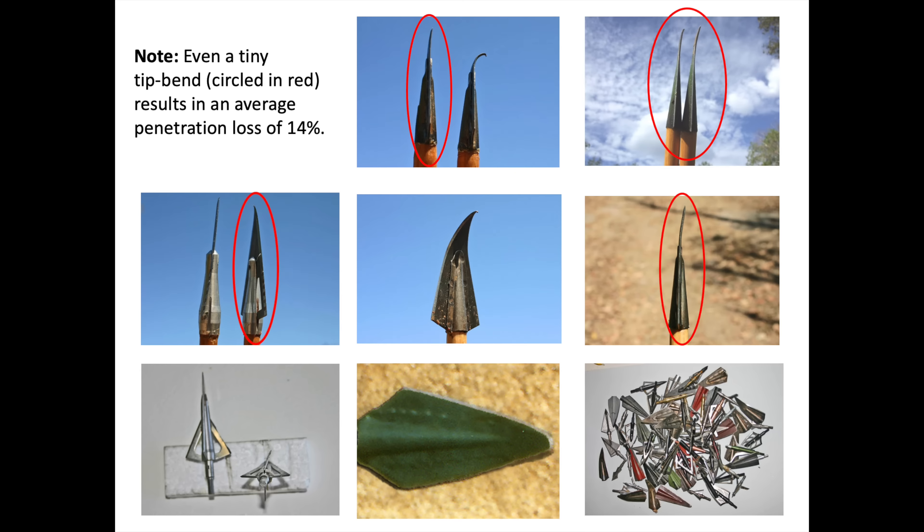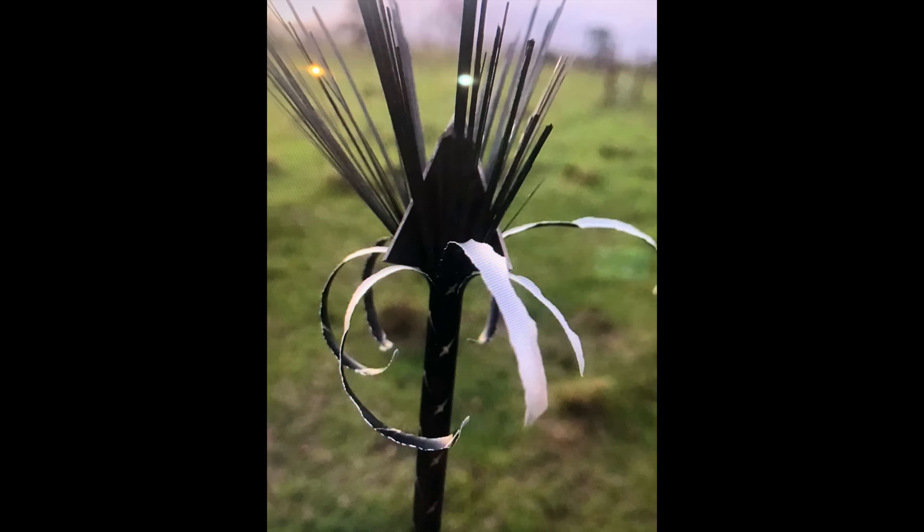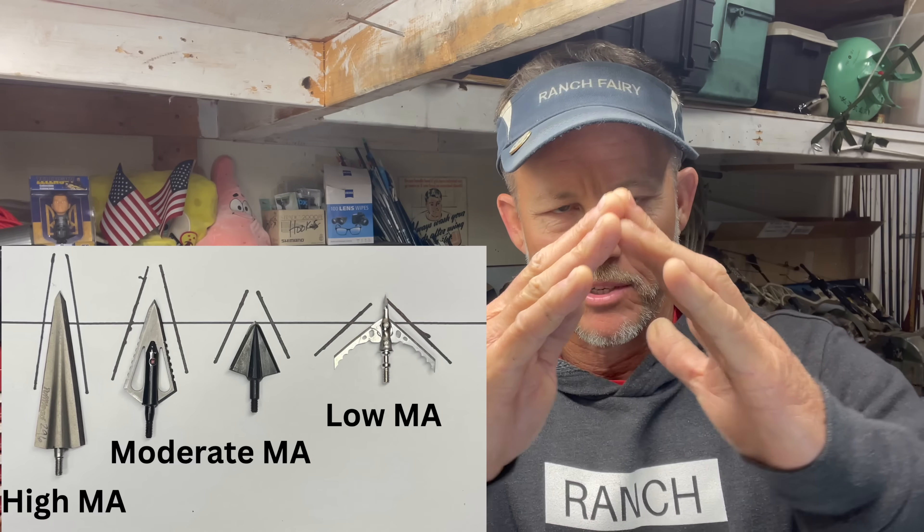Moving on to paragraph two, page two, 2008 Update Part One — this is exactly where those people skipped over. Reading directly from Dr. Ed's writing: 'Assuming a structurally intact arrow' — this is key: can't bend, can't break, blades can't fly off, nose can't bend, inserts can't bend. Assuming structural integrity at threshold mass — so at 650 grains — a broadhead having a low mechanical advantage, meaning steep blades or multiple blades, might show a jump in bone-breaching rate from 15 percent to 25 percent or so.